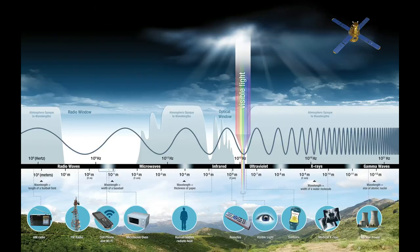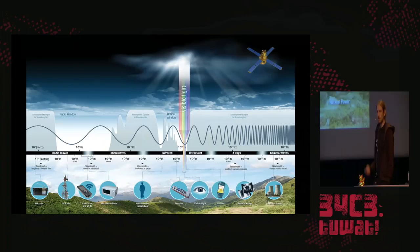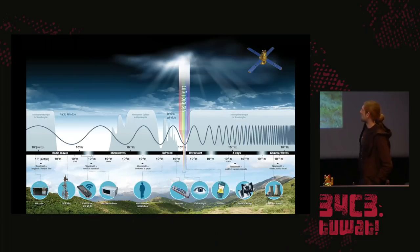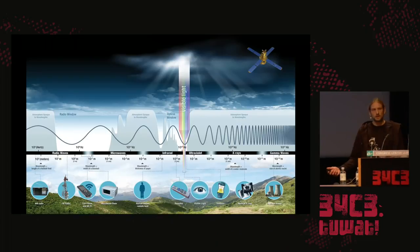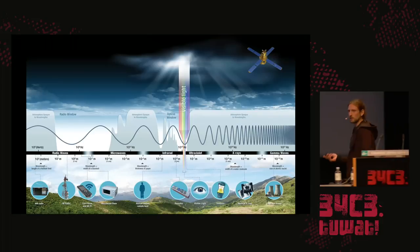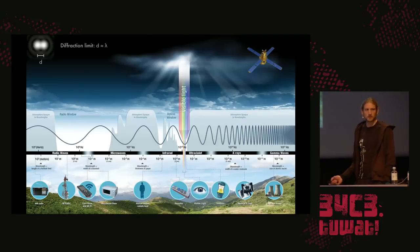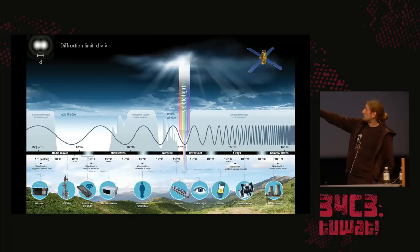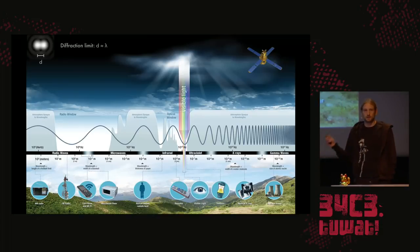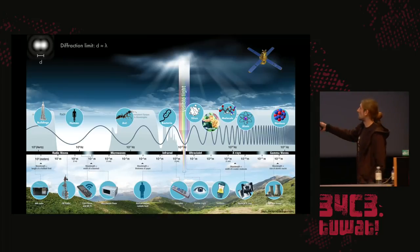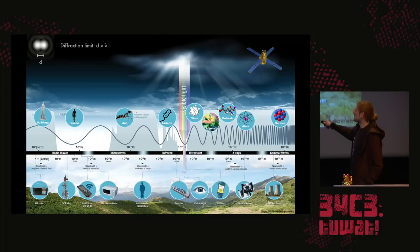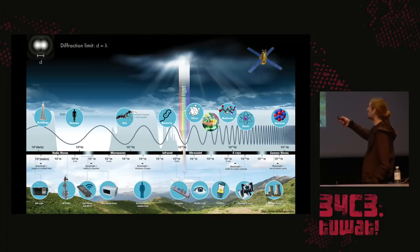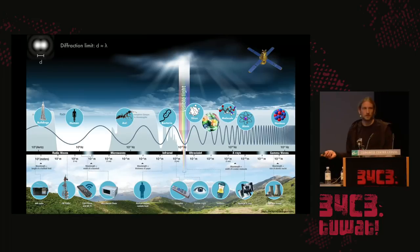Hier haben wir das elektromagnetische Spektrum. Wir sind alle umgeben von einer Vielfalt von elektromagnetischen Wellen, die man nach verschiedenen Wellenlängen einteilen kann. Wir haben Radiowellen mit Wellenlängen von mehreren Metern, Mikrowellen mit ein paar Zentimetern, dann Infrarot und sichtbares Licht mit ein paar hundert Nanometern. Wenn wir die Wellenlänge immer kleiner machen, kommen wir ins Ultraviolettspektrum und dann bei 0,1 Nanometern zur Röntgenstrahlung. Es gibt das Diffraktionslimit: Um zwei Objekte mit dem Abstand D aufzulösen, muss man eine Wellenlänge nehmen, die kleiner oder gleich diesem Abstand ist. Um Viren oder Proteine anzuschauen, müssen wir deshalb Röntgenquellen benutzen.